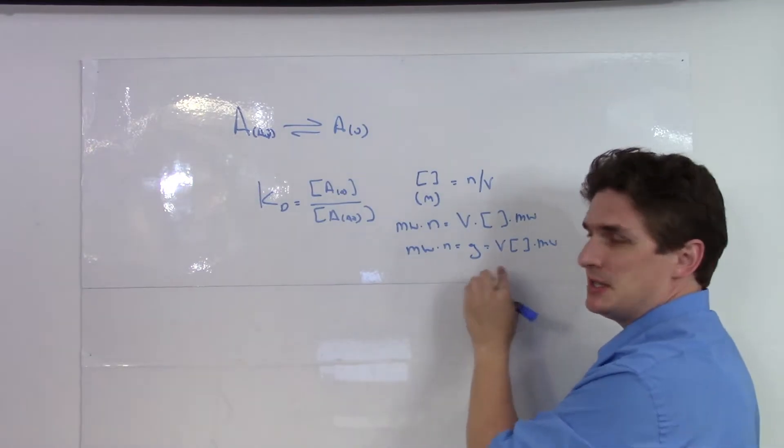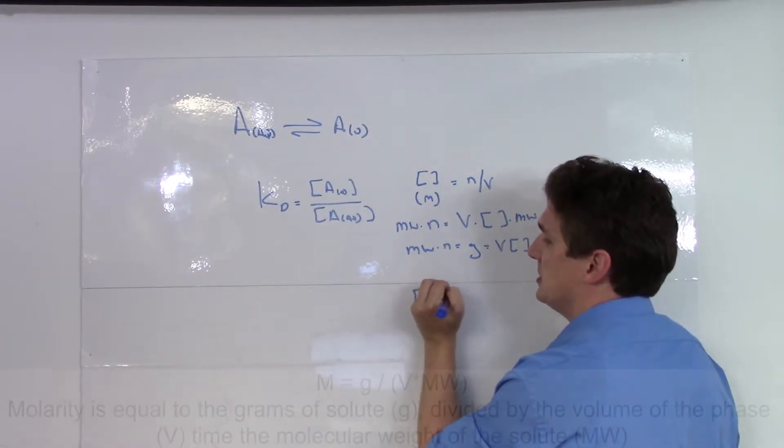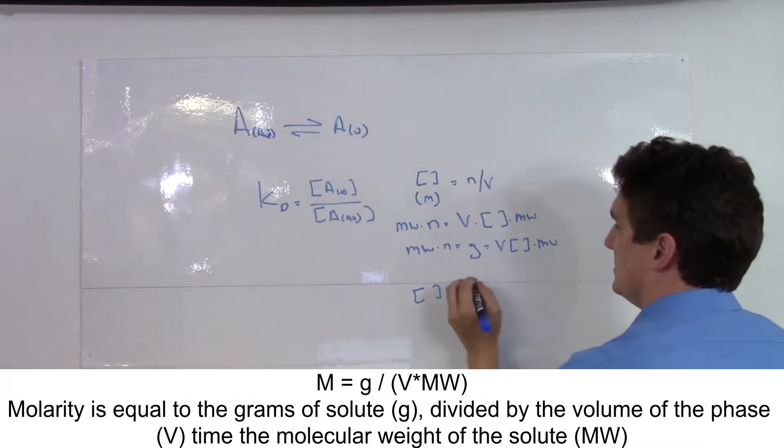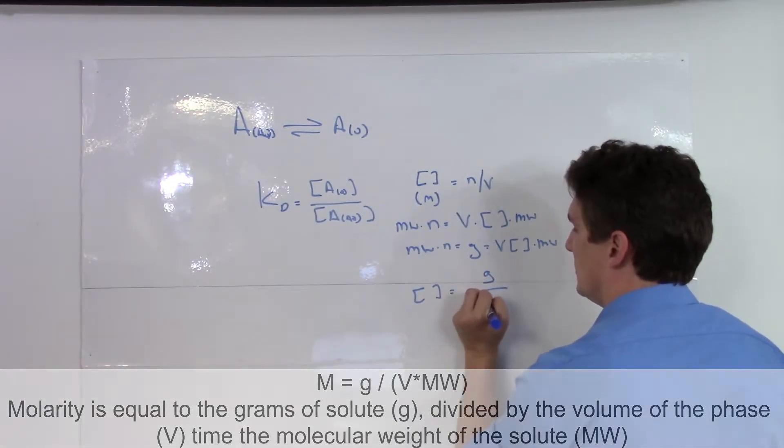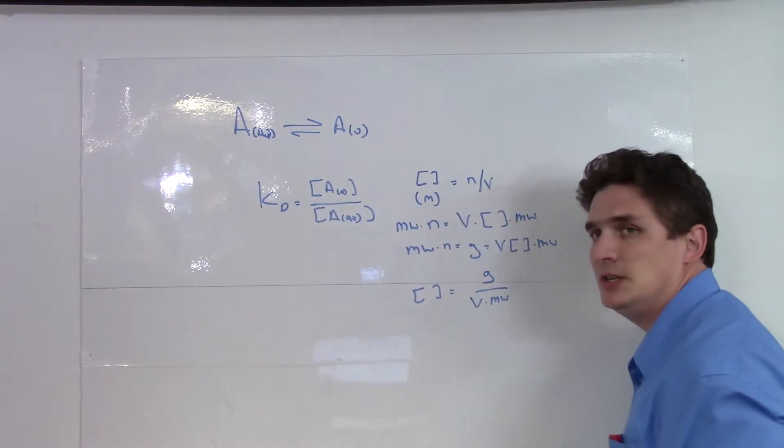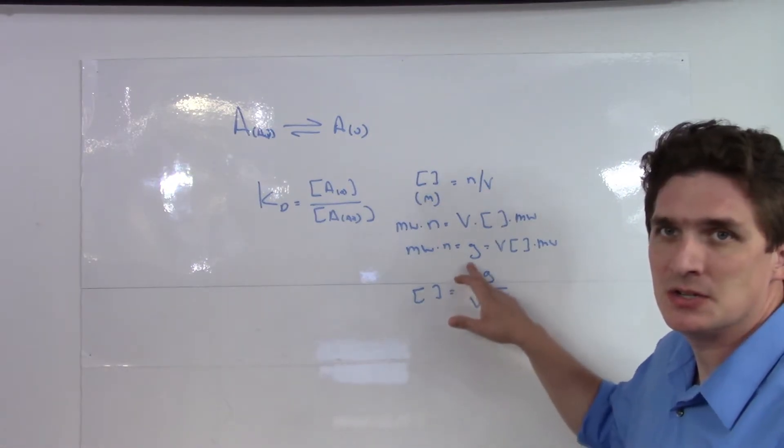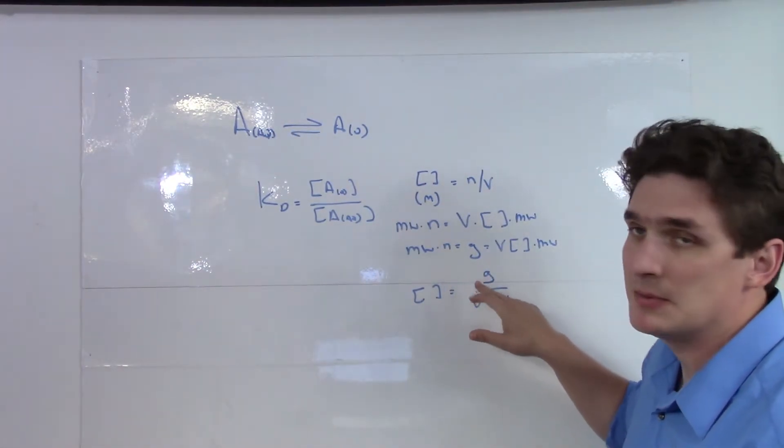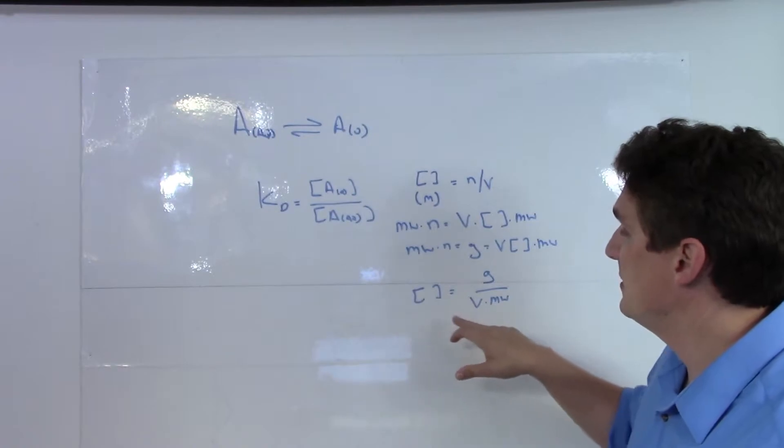So if we rearrange to solve for concentration, we get that concentration is just the grams over volume times the molecular weight. So really no witchcraft here. Concentration is grams over volume, which is moles, or grams over molecular weight, which is moles. Moles divided by volume is concentration.